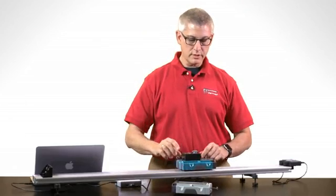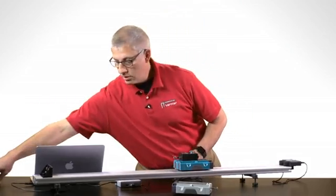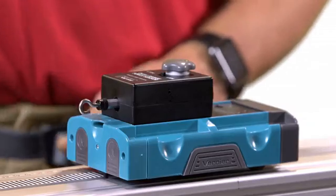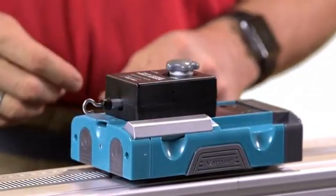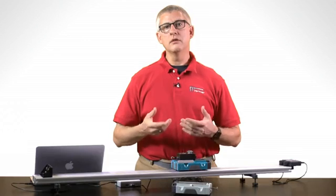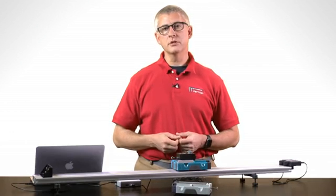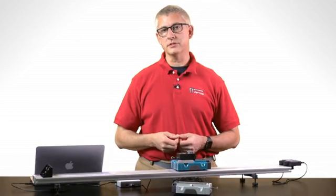The top surface of the cart also includes four mass trays. I can take a mass, put the mass in the mass tray, and change the total mass of the cart without having to remove my dual-range force sensor. This way a student can do experiments looking at how the mass of the cart affects the dynamics in kinematics.